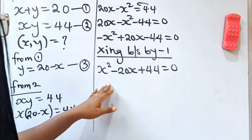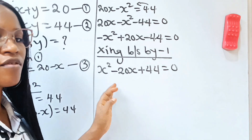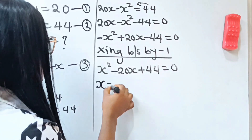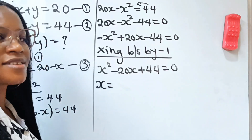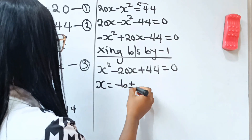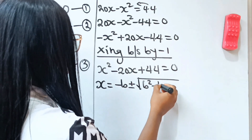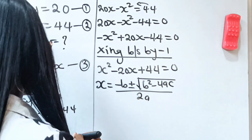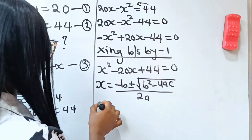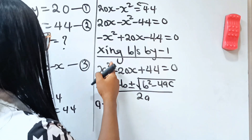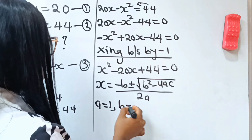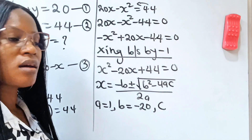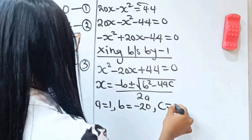Now we are going to solve this using the quadratic formula, which states that x equals negative b plus or minus the square root of b squared minus 4ac, all divided by 2a. In this case, a is the coefficient of x squared, which is 1; b is the coefficient of x, which is minus 20; and c is our constant, which is 44.